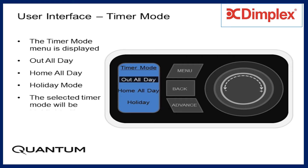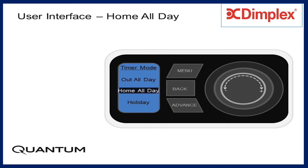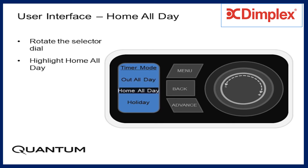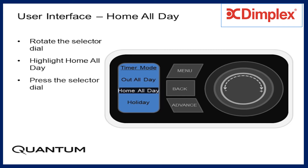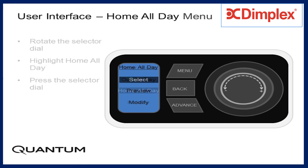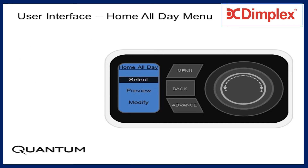The current selected timer mode will be highlighted by default. Rotate the selector dial and highlight Home All Day, then press the selector dial. The Home All Day menu is displayed.